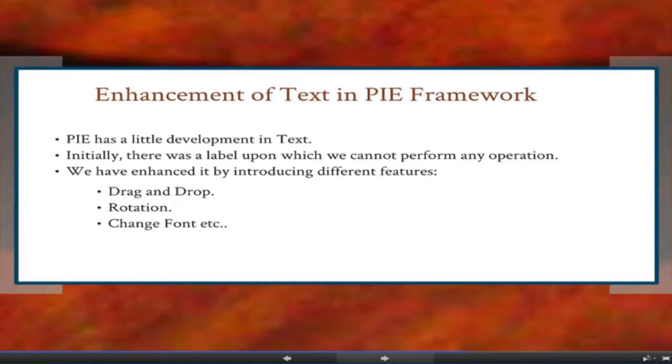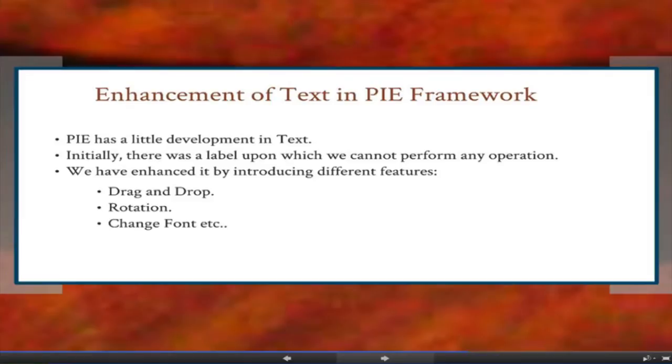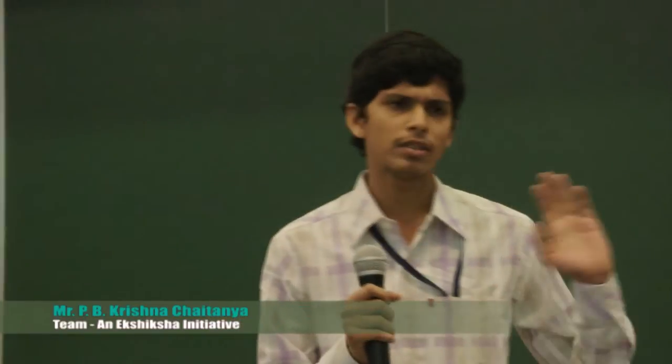We have enhanced PI Label's features by introducing three different divisions: drag and drop, followed by rotation, and finally change of text. Drag and drop was a concept initially applied over PI objects — now we have extended and inherited that property over to PI text. It is used for improving interactiveness, implemented using a mouse click event. It gives the user freedom to drag and drop the text on the display screen wherever they want it displayed.